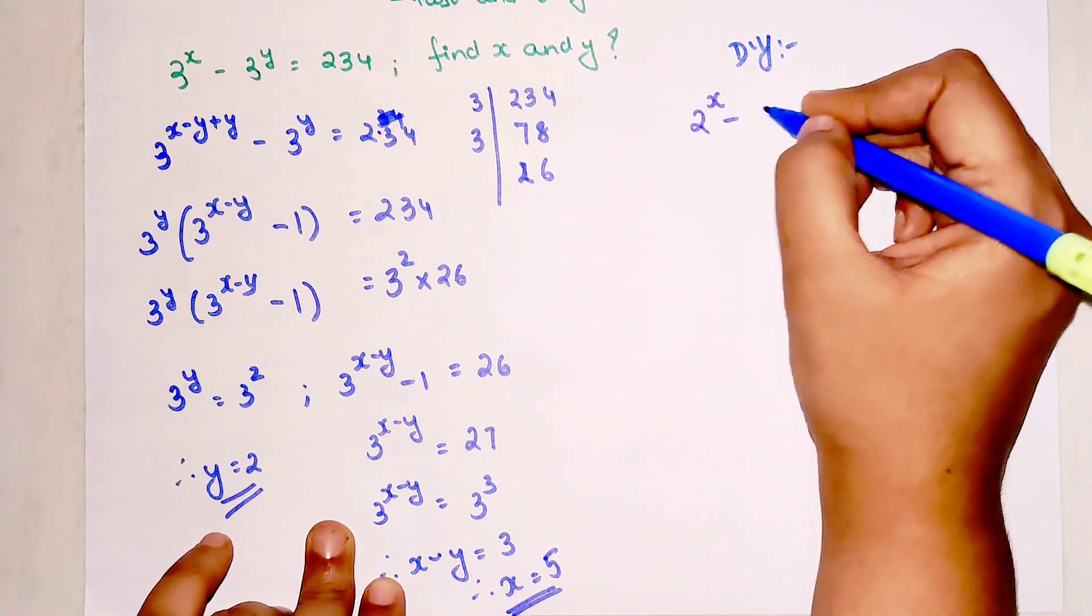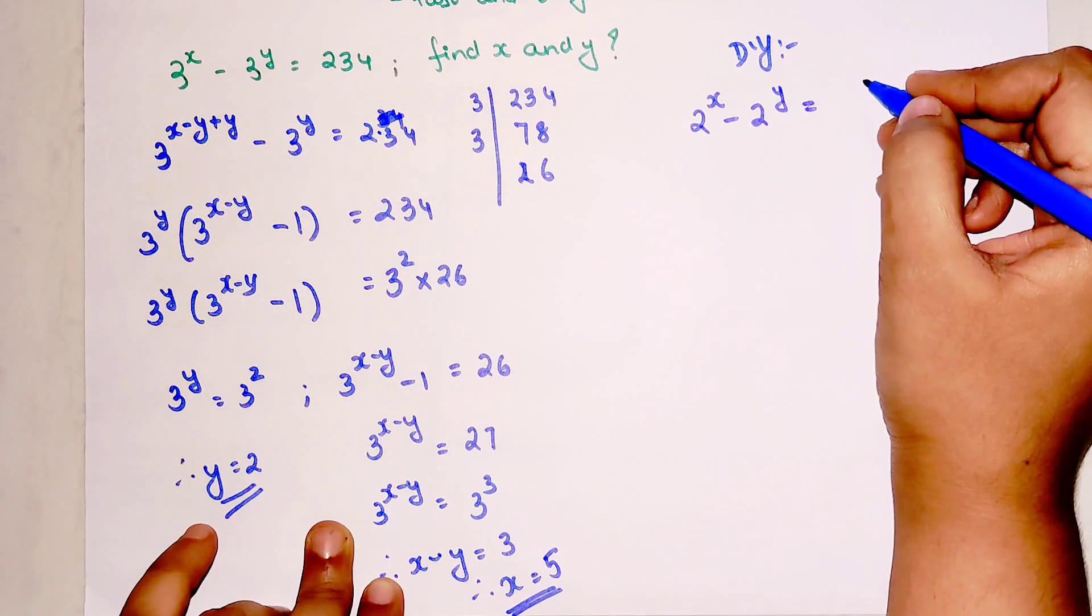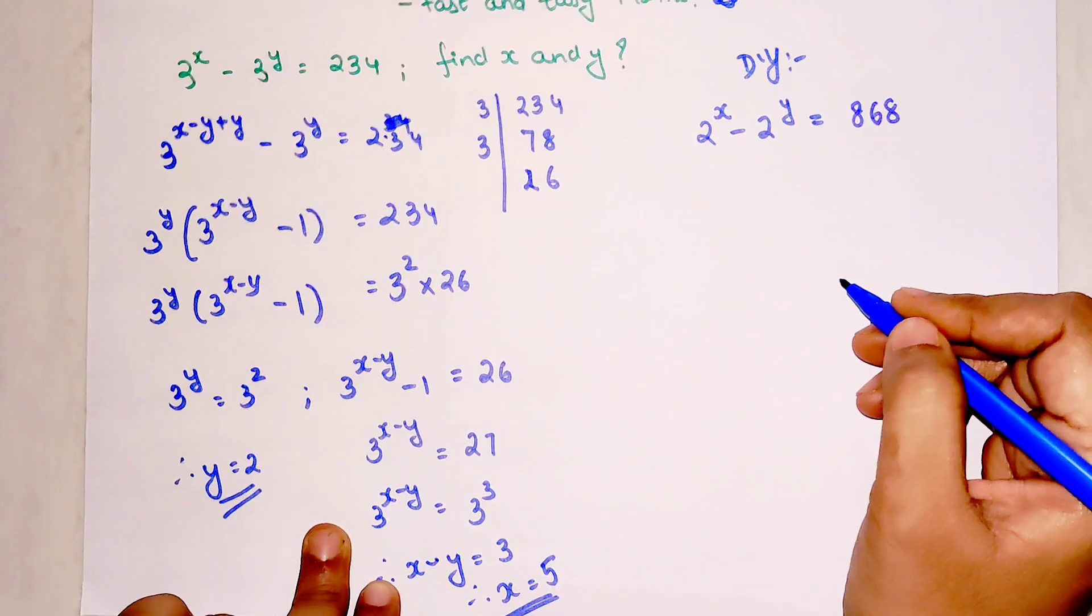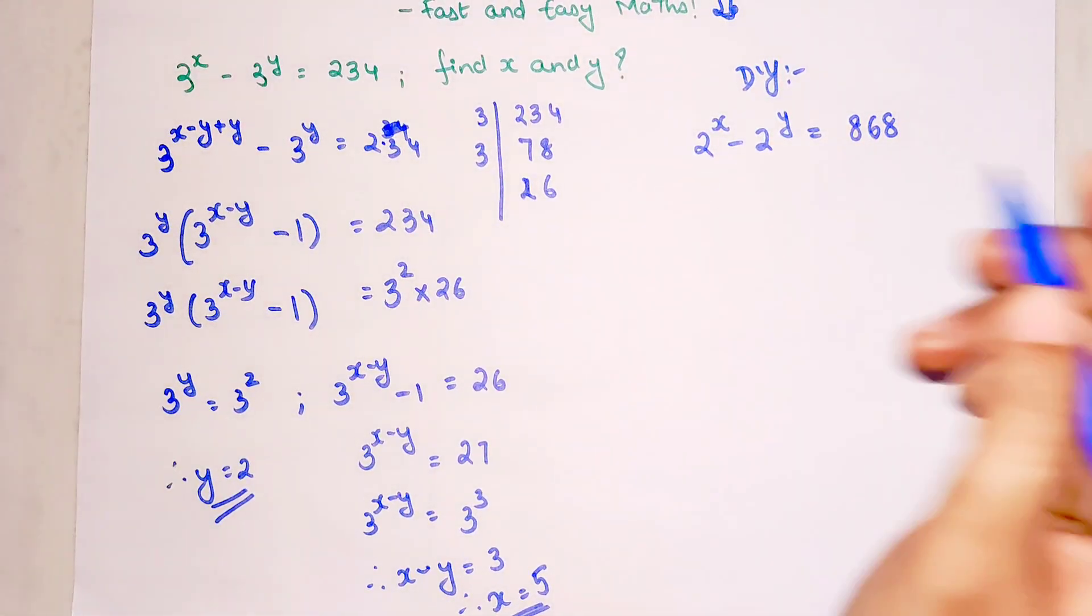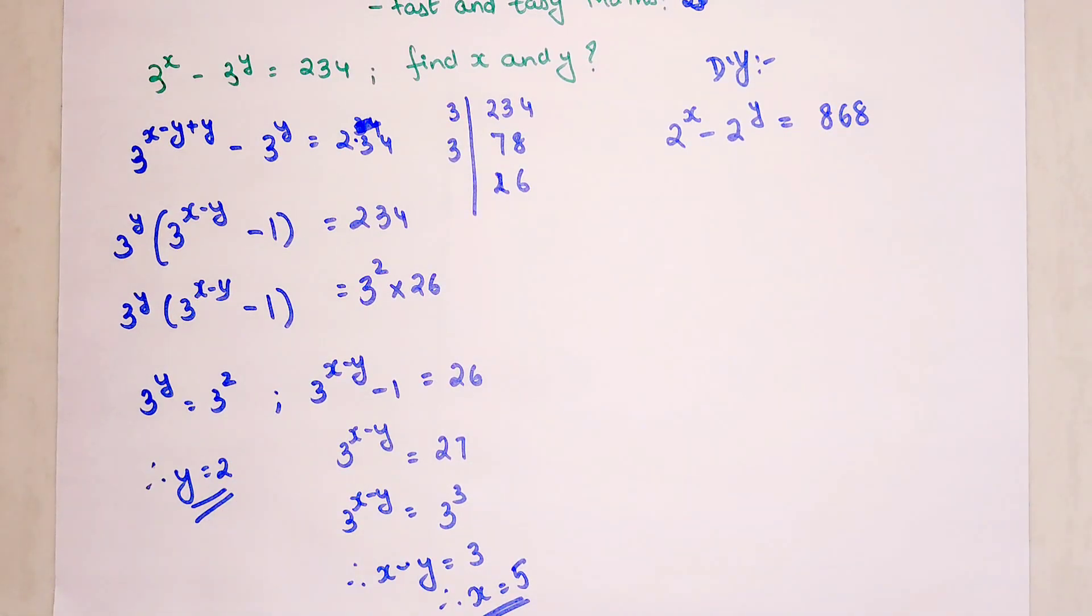Now for your DIY, you have to tell me what is the value of x and y when 2 raised to x minus 2 raised to y gives you the difference as 868. Do let me know your answers in the comment section, and that's it for today. I will see you in the next video.